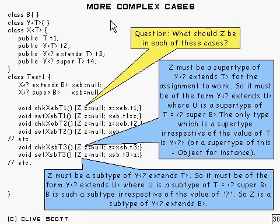Here's a few more complex cases. The question I'm going to ask is, what should Z be for each of these particular cases? Z is essentially a placeholder - this won't compile because I've not defined Z. So I'm asking, what should I set this type Z to? That's the question I'm asking.